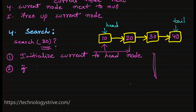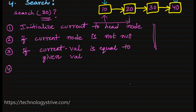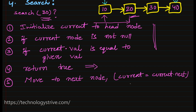The search algorithm is the same as traversal code, except instead of printing the data we check whether the value of the current node matches the given value. If current node is not null, check if current.value equals the given value. If it matches, return true — we found the element. If not, go to the next node. Continue from steps 2 to 5 until we reach the end of the list.